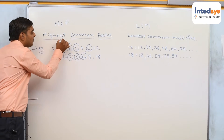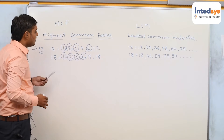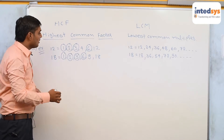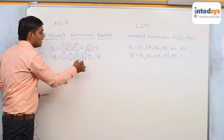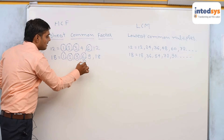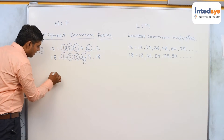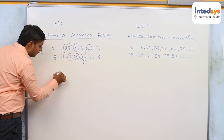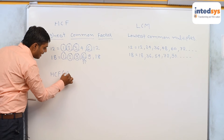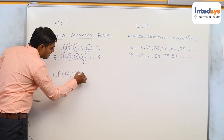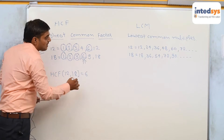Highest common factor means the highest number amongst the common numbers 1, 2, 3 and 6. The highest number is 6. That's why we can say that the HCF of 12 and 18 is 6.